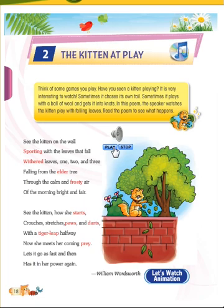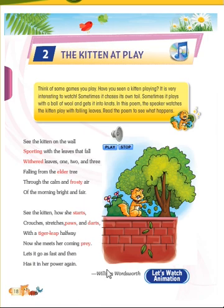Now she met her coming prey. Prey means the food of a kitten, which she's going to eat. 'Let's go as fast and then has it in her power again' — she's telling that we'll go fast to catch that prey, and if we catch it we'll get power. Now let's watch the animation.